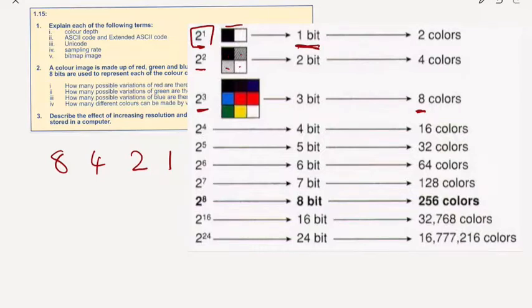So for example the first one, 2 to the 1, is either going to be a 0 or a 1, i.e. two colors. But if I look at two bit, this one up here, I have the possibility of 0 0, 0 1, 1 0, 1 1. So four possible different color combinations as you can see here.